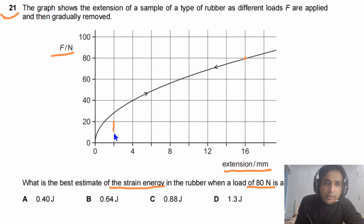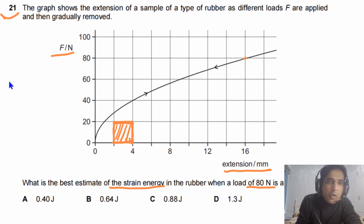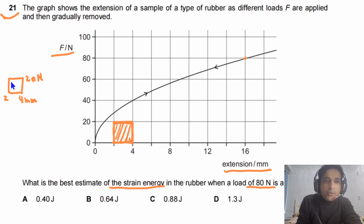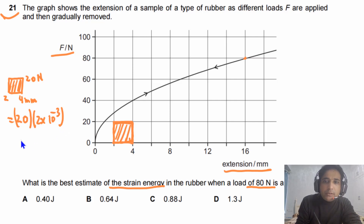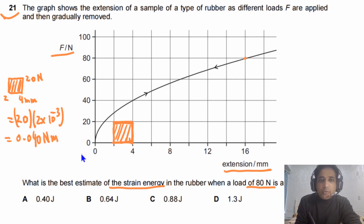The first method is counting squares. For one small square, on the y-axis we have 20 Newtons force, and the extension is 2 millimeters. So the area of one small square equals 20 times 2 times 10⁻³, which equals 0.040 Newton meters. This is the strain energy represented by one small square. The total area equals the number of squares times 0.040 Newton meters.